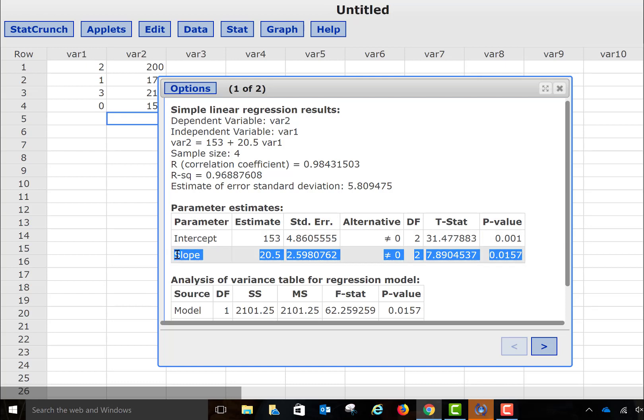Again, make sure you're looking at the line that is indicated by the slope, not the intercept. And I can see my p-value is .0157, so now I can compare that to my significance level to determine whether or not I can reject the null hypothesis.